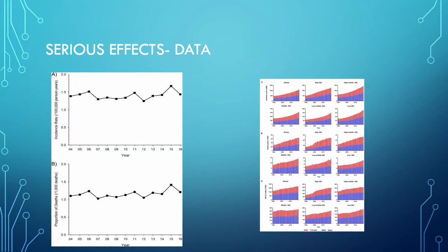In the two graphs shown, we are comparing data on incidence rates as well as death rates due to infective endocarditis. The data on the right is from a study done in the United States, showing the split of female and male patients. There is a steady increase in both the incidence rate and death rate. The graph on the left is from a study done in Finland, where the rates are not steadily increasing but instead are fluctuating.